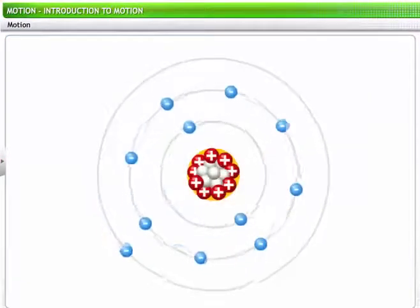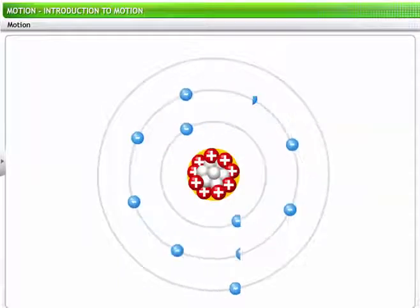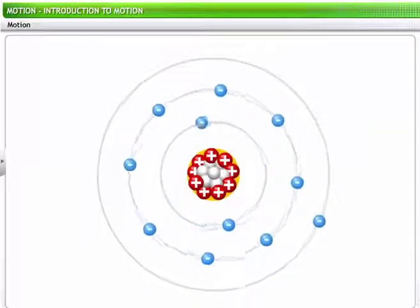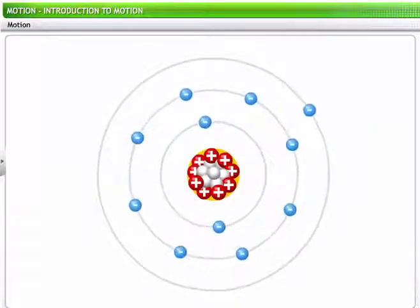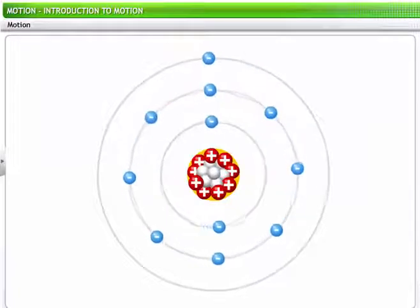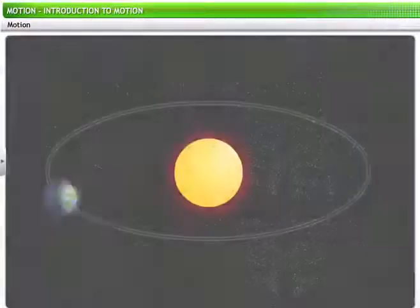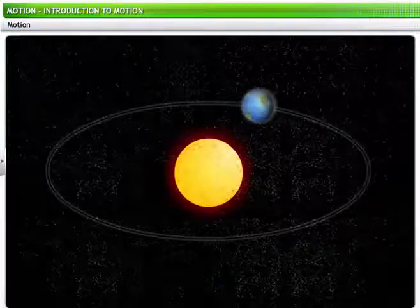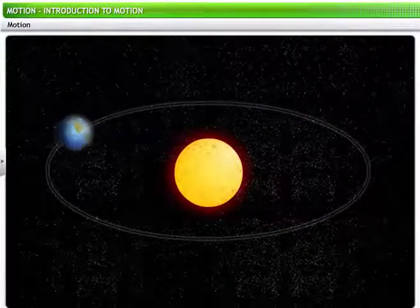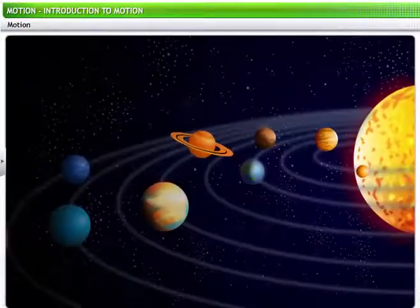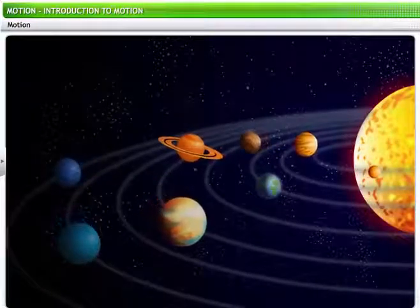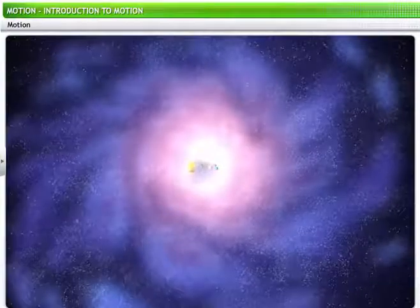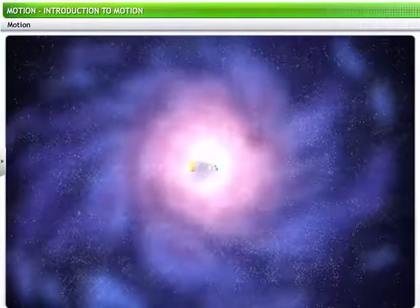Tiny particles, such as atoms and molecules, and heavenly bodies, such as planets, stars, and galaxies, are all in motion. For example, Earth rotates around its own axis and revolves around the sun in an orbit. Similarly, other planets, solar systems, and galaxies in the universe are all constantly in motion.